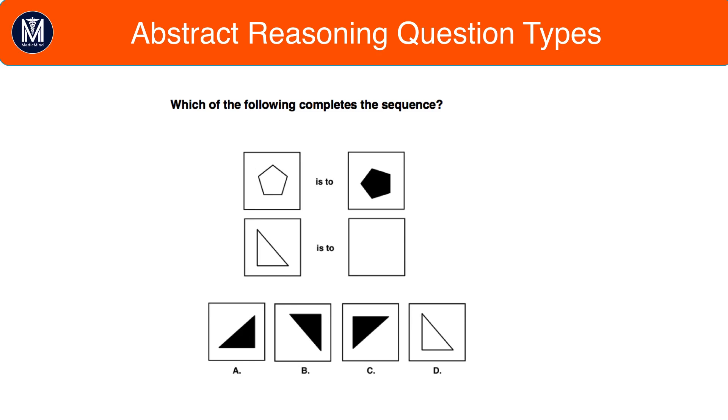For this question, the shape is rotated 90 degrees anti-clockwise and it turns black. First of all, we can knock out D immediately because the shape is white. We want the triangle to be rotated 90 degrees anti-clockwise, and therefore the answer is A.